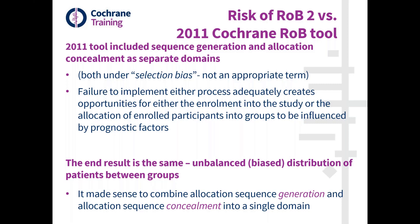Those two domains in the old tool map onto the randomization domain in ROB2. If knowledge of the next assignment leads to participants being withheld from entering the trial, then that leads to selection bias. But if it leads only to participants being allocated to either their preferred intervention arm or their doctor's preferred arm, then that introduces confounding. So there are two ways in which a problem with the randomization can lead to bias: biased allocation to comparison groups, and biased enrollment to the study. That's why we dropped the selection bias term — it's confusing and means different things to different people.